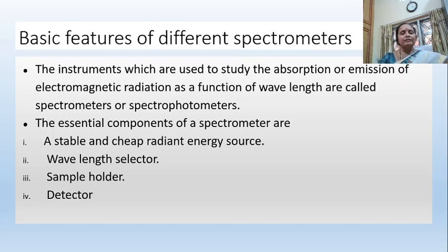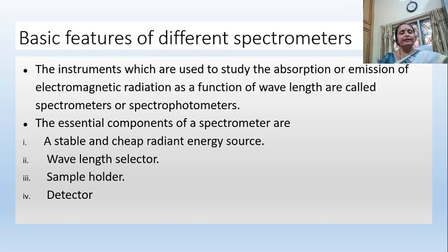The essential components of a spectrometer are: a stable and cheap radiant energy source, a wavelength selector, a sample holder, and a detector. In today's class, we are going to study regarding the radiant energy source and the wavelength selector.